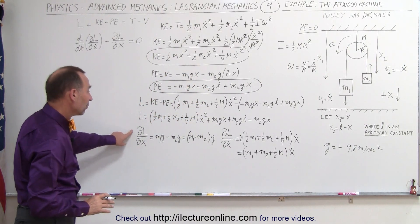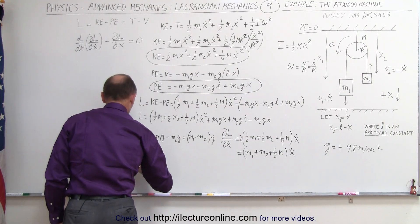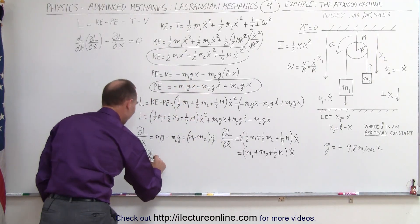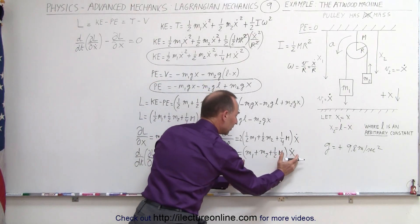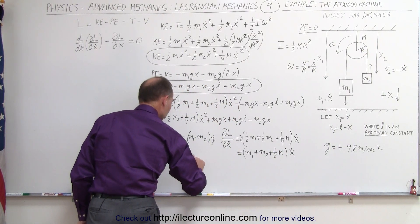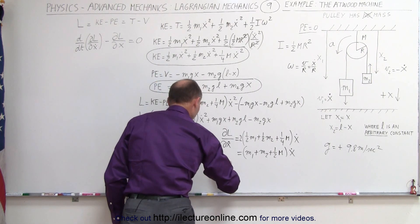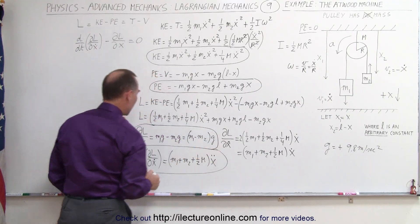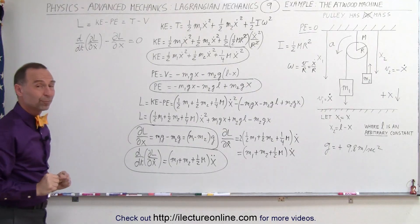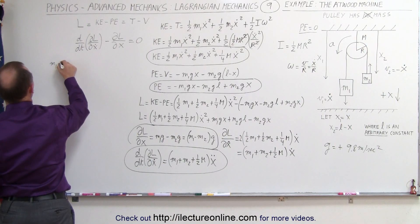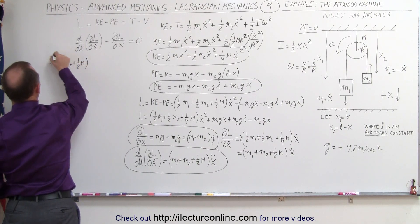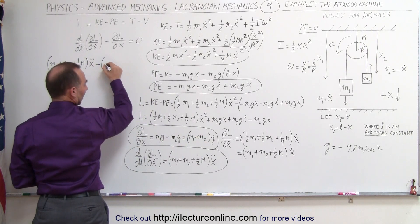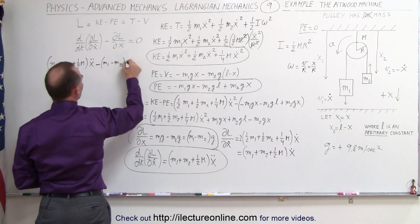Finally, we take the time derivative of the partial of L with respect to x-dot. That is equal to m1 plus m2 plus one-half times the mass of the disc, times x-double-dot. Now I have both quantities ready to plug into the Euler-Lagrange equation. The left side gives m1 plus m2 plus one-half times the mass of the disc times x-double-dot, minus m1 minus m2 times g, equals zero.